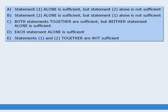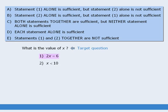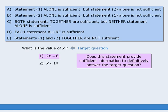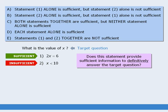Now let's try another question. This question is very similar to the last, except statements 1 and 2 have been reversed. Beginning with statement 1, does this statement provide sufficient information to definitively answer the target question? The answer here is yes, so statement 1 is sufficient. Moving on to statement 2, is this information sufficient to answer the target question? The answer is no, so statement 2 is insufficient. In this case, the correct answer is A — statement 1 alone is sufficient, but statement 2 alone is not.